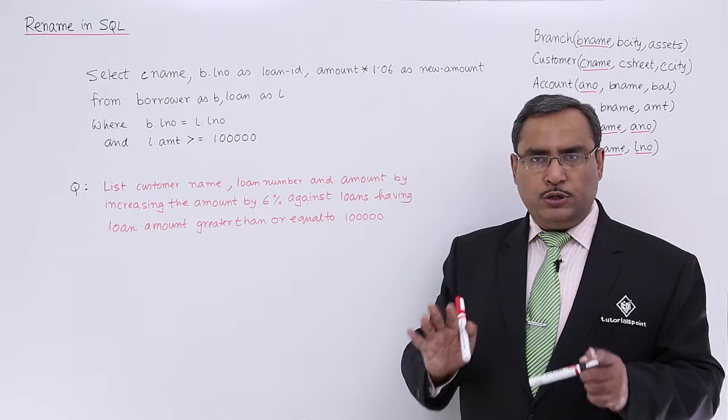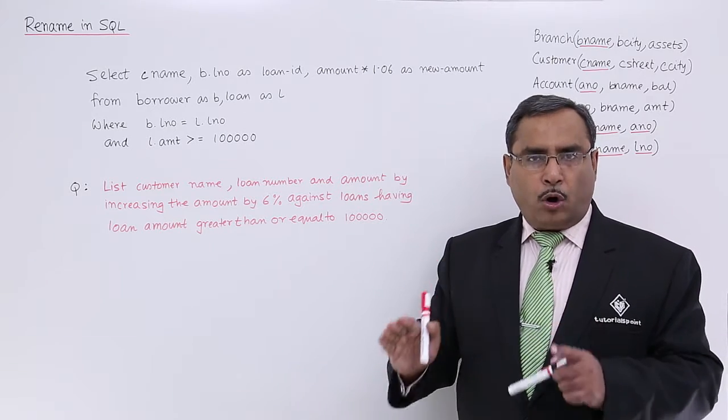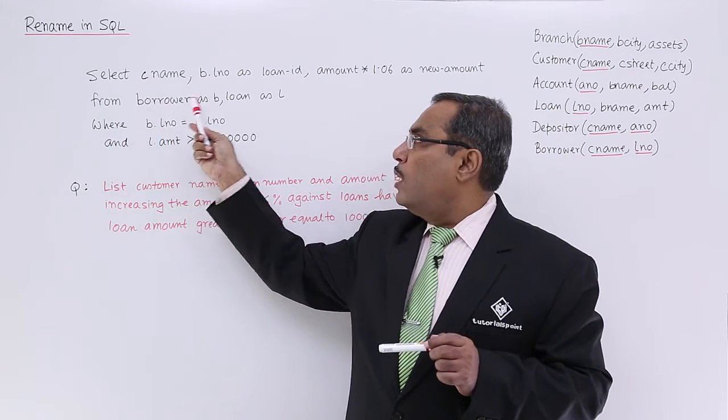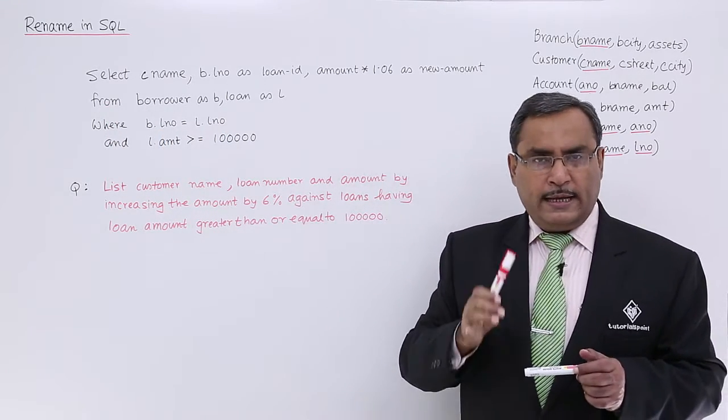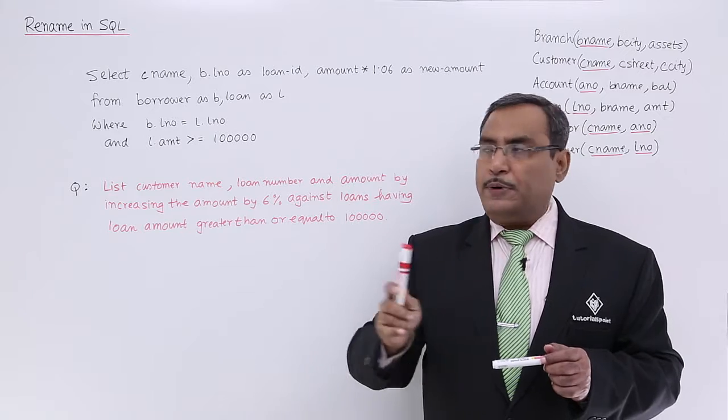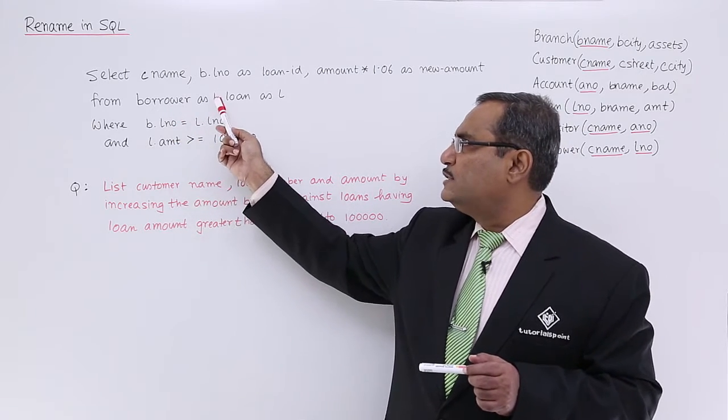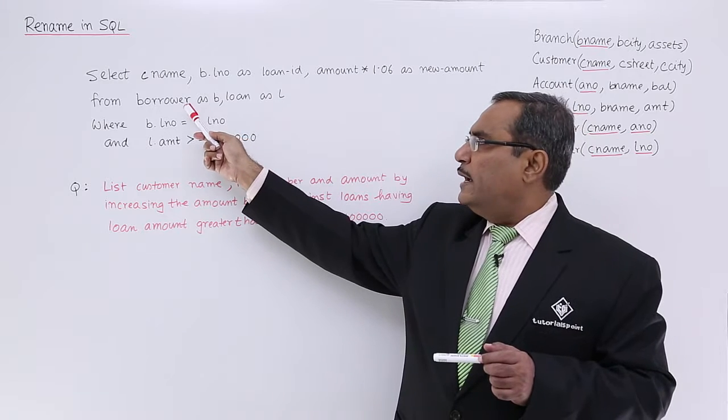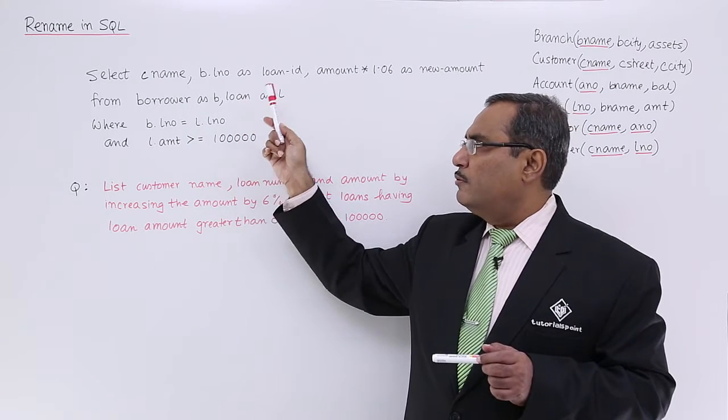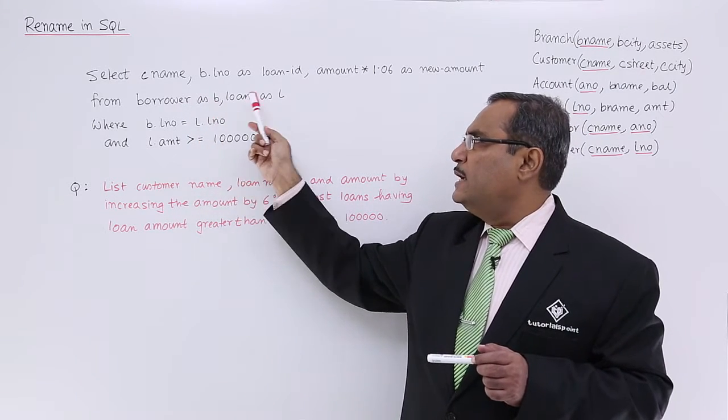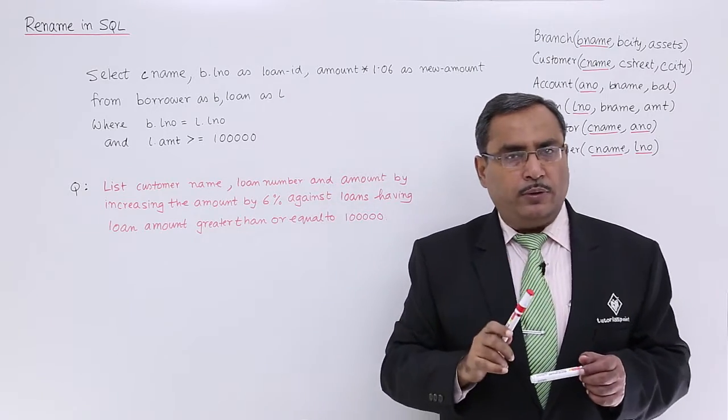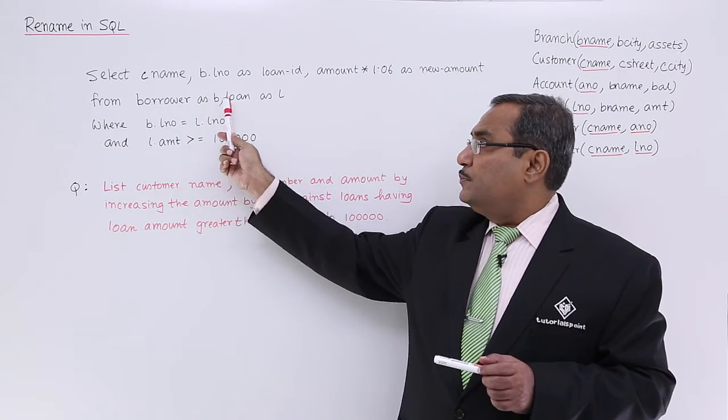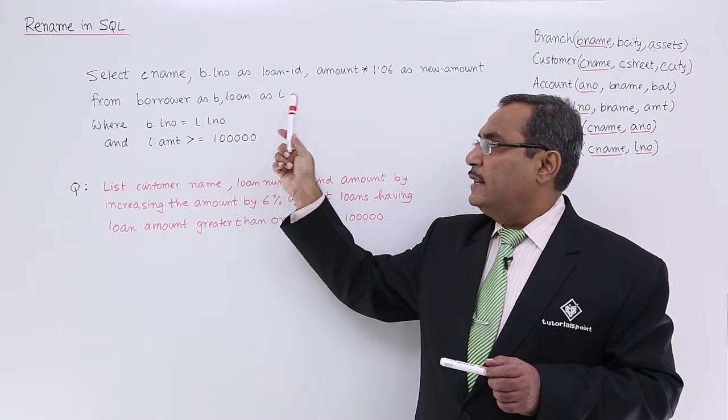We are going to use loan and borrower relation or the schema. From borrower, loan, but here we are using the rename operation. We are writing borrower as B and loan as L. You know that in between borrower and loan, in this case in between B and L, the Cartesian product will take place. In this way these two tables will get related.